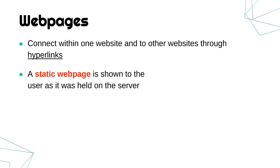There are two types of web pages you need to know about. A static web page is shown to the user exactly as it was held on the server. You've got a client, you've got a server, the server sends the web page to the client. The client is usually a web browser, and what you see on your screen is in exactly the same format as it originated from the server. The word static means it doesn't change — so this never changes between the server and the client.